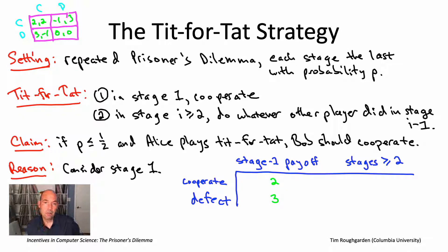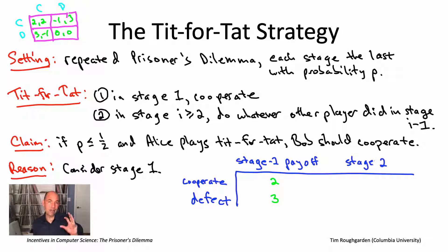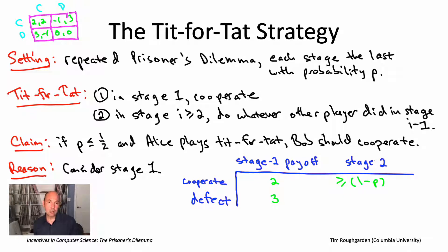Now think about the ramifications of Bob's action at stage one for stage two, should stage two occur, given Alice is playing tit-for-tat. If Bob cooperates in stage one, then if there is a stage two, Alice will cooperate, mimicking Bob's stage one action. So Bob's expected payoff includes the probability that there is a stage two — that's one minus P, or 95% in our running example — and if stage two occurs, Bob gets a payoff of at least two, since Alice will be cooperating.